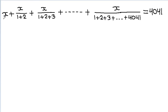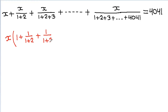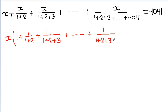Here, if we take x common, then we get x times 1 plus 1 by (1 plus 2) plus 1 by (1 plus 2 plus 3) plus dot dot dot plus 1 by (1 plus 2 plus 3 plus up to 4041).